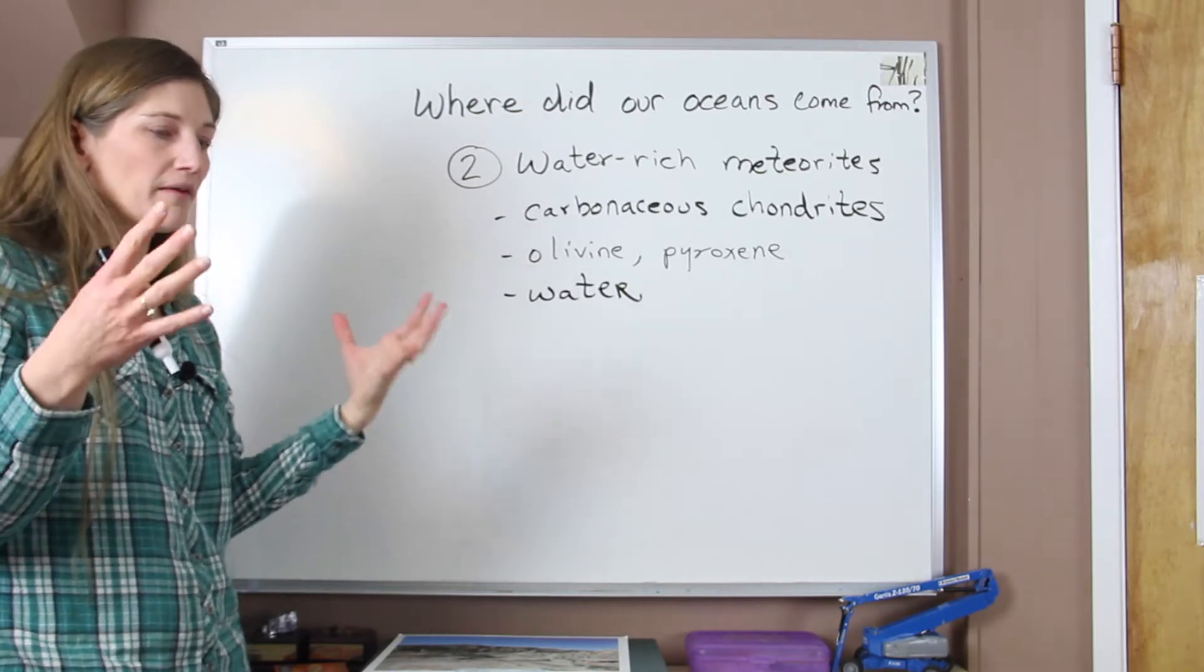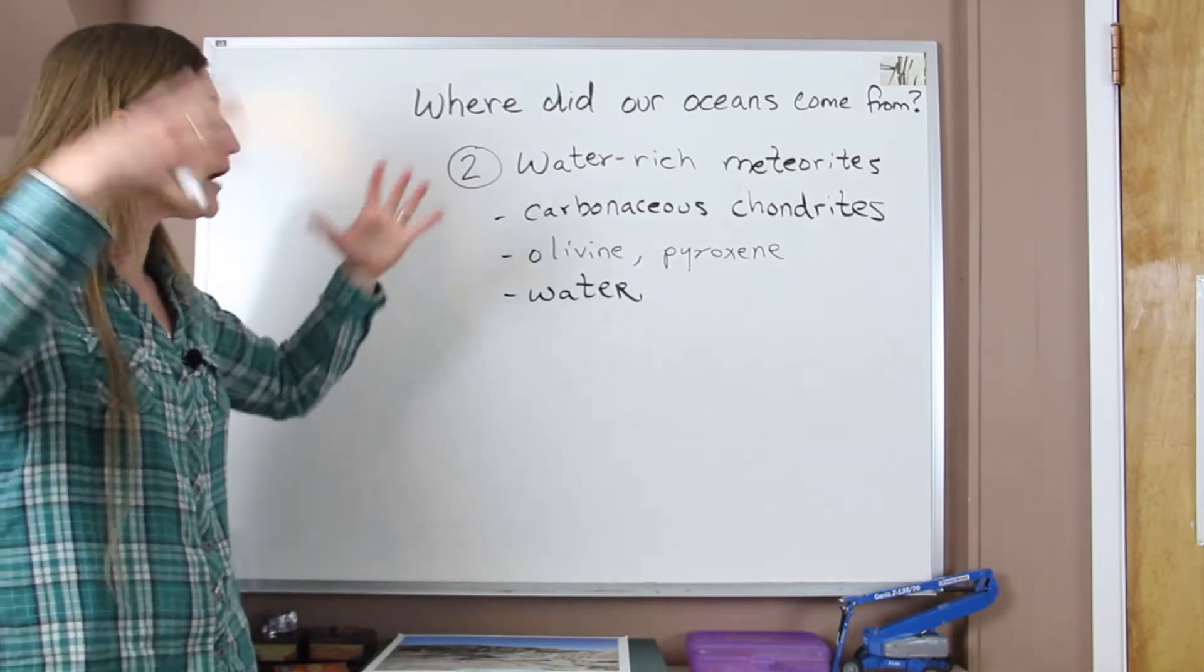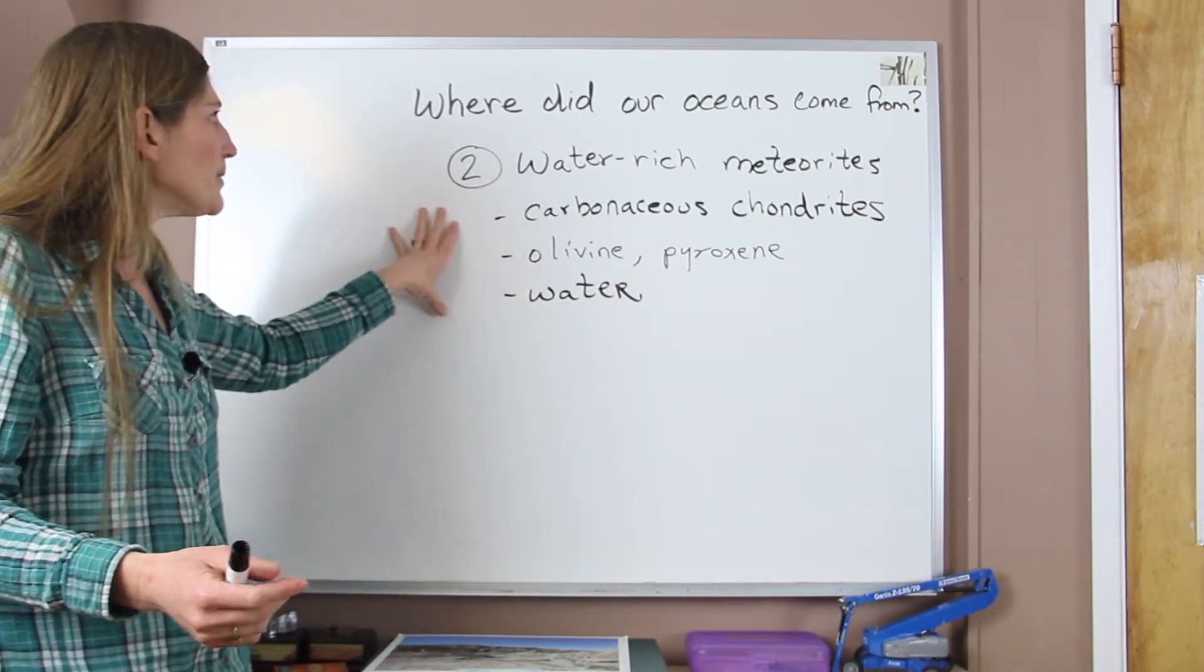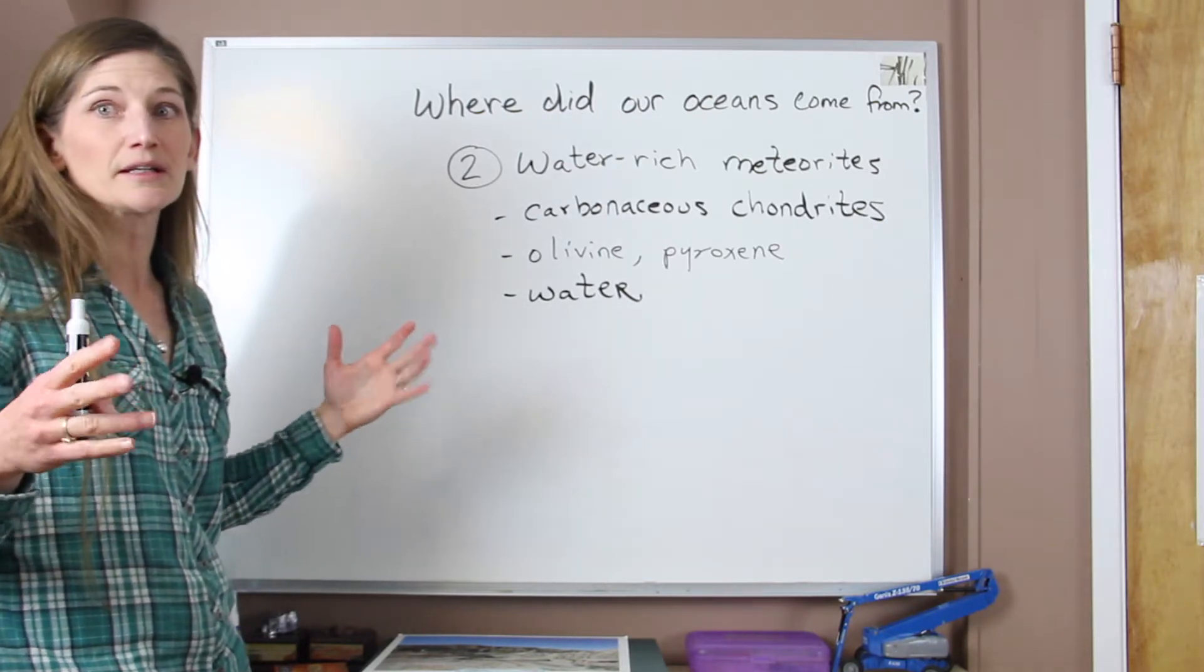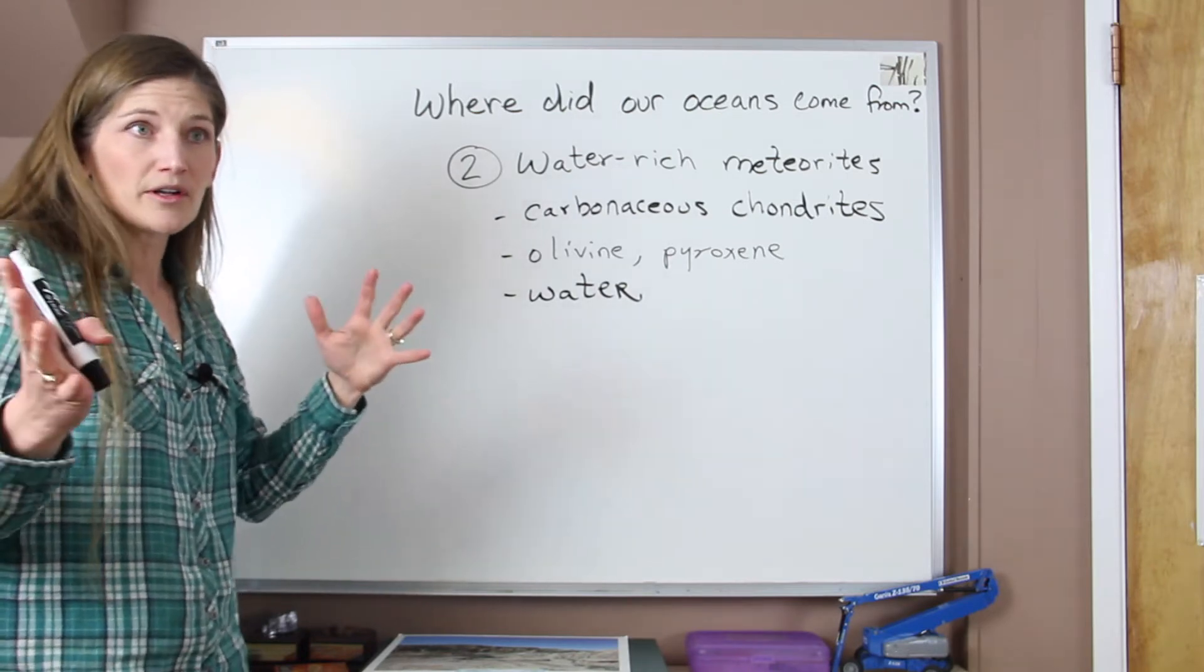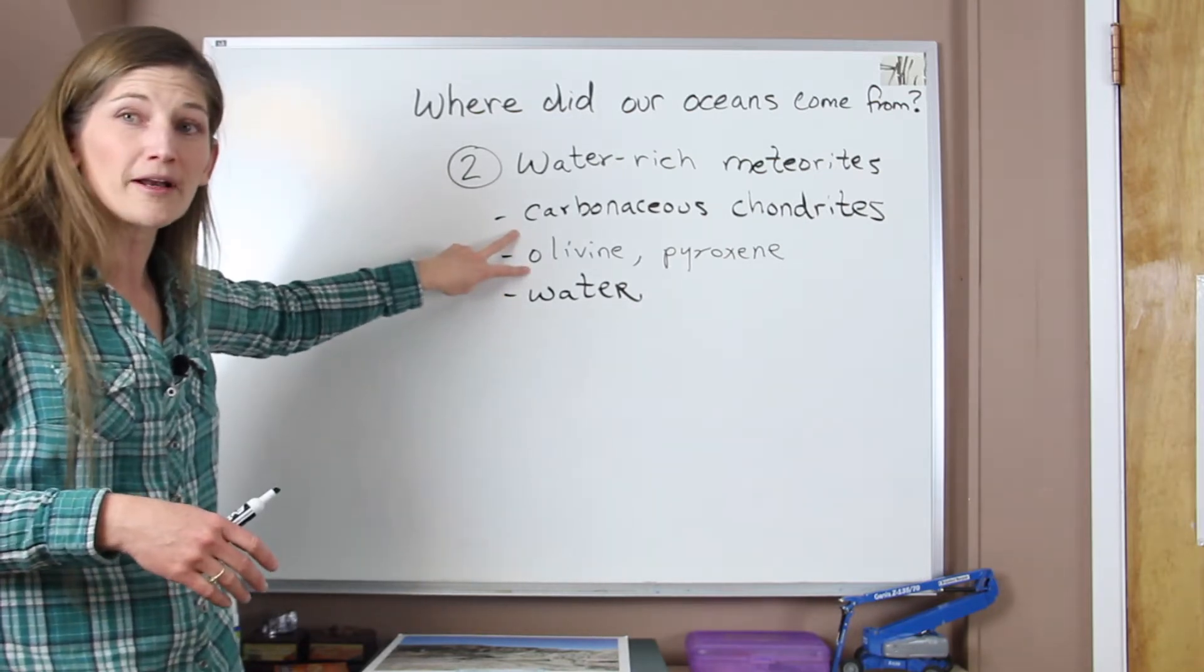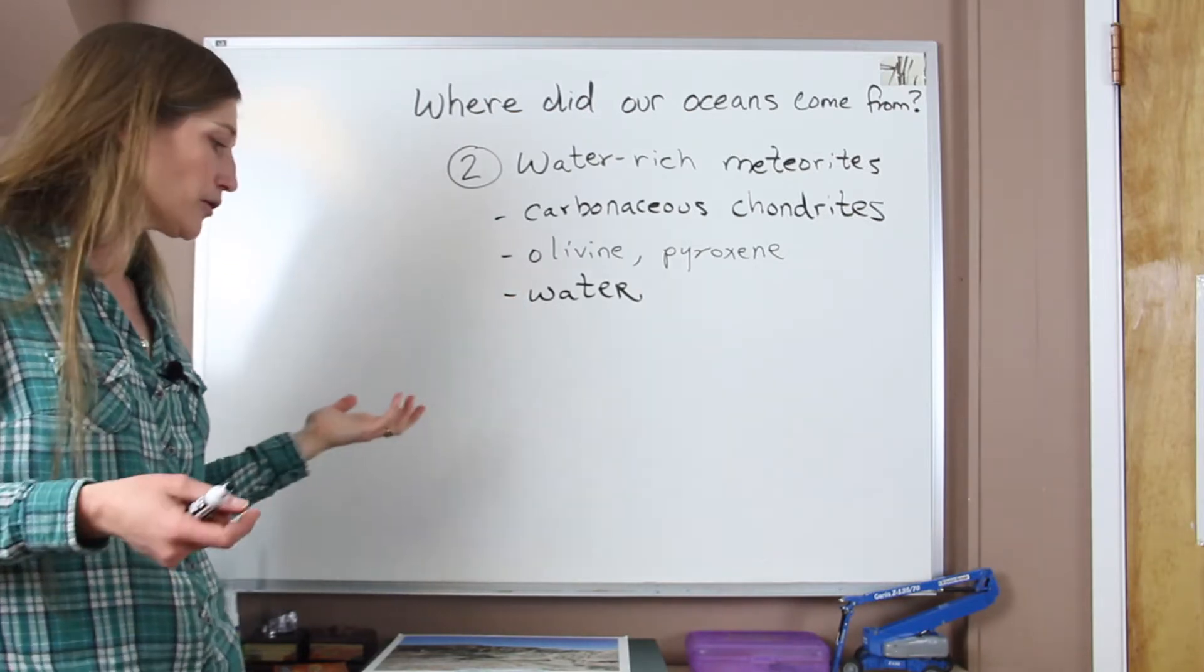So this is one possible place where our water could have come from. These carbonaceous chondrites are associated with the belt of meteorites that are outside of the zone where the Earth is. The thought is that movements within the solar system, possibly Jupiter changing its orbit, could have pushed some of this material towards the Earth. These would have landed and hit, the material would have become incorporated in the early Earth, and the water that was present could have led to the water that we see in our oceans today.